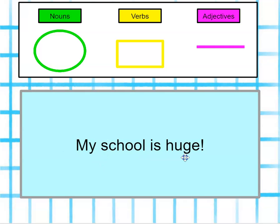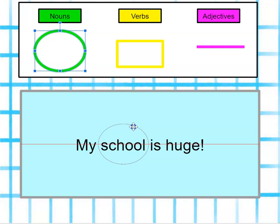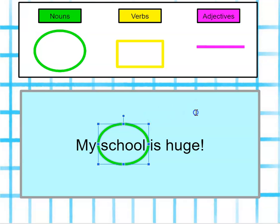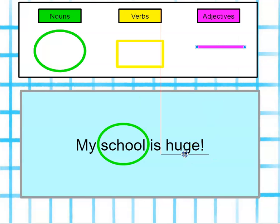My school is huge. Do we see a person, a place, or a thing? I know the school is a place. Do I see any action words or verbs in this sentence? No. But I do see a word that describes our school. Our adjective in the sentence is huge — our school is huge.